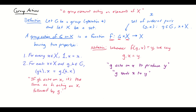A lot of people call this a left group action, and there is also something called a right group action. We probably won't use right group actions in this course. In a right group action, the set element goes on the left and the group element on the right, and the composition rule becomes: x acted on by gh equals (x acted on by g) acted on by h. But that's not how we'll define things here. I'm right-handed and I prefer left group actions — I find them more natural.